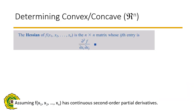If we have a function of n variables, then the Hessian matrix is an n by n matrix, and the ijth entry of this matrix is the second derivative of the function with respect to variable xi and xj. So if i equals j, for example row one column one, we take the second derivative with respect to x1 twice. If i equals 1 and j equals 3, we take the second derivative with respect to x1 and then x3.